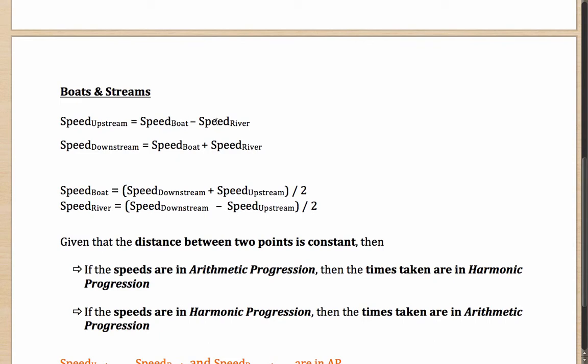So when there is a resistance, when there is a water flow, like the speed of the river, what will happen? The speed upstream will be the difference of these two values. Why so?